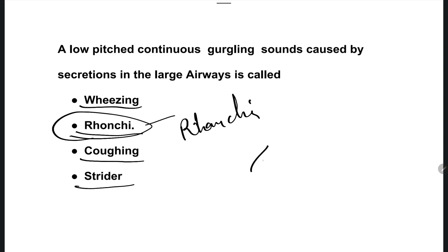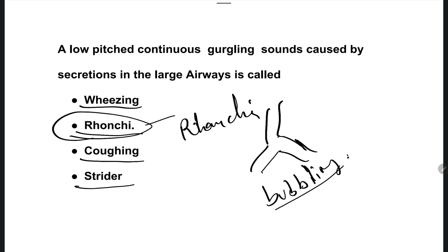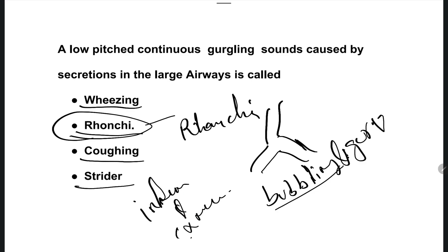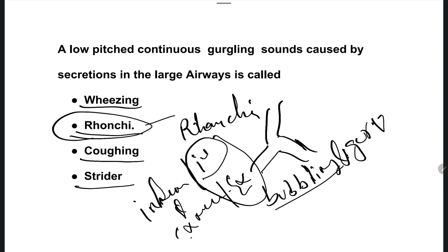Ronchi is a large airway sound — from the bronchi or trachea. These sounds can be heard like bubbling or gargling, similar to bubbles in water. They can be heard during both inhalation and exhalation — inspiration and expiration. This continuous gargling sound is called ronchi.